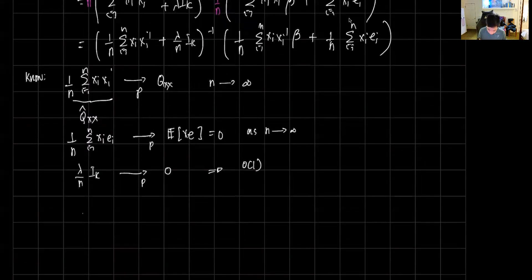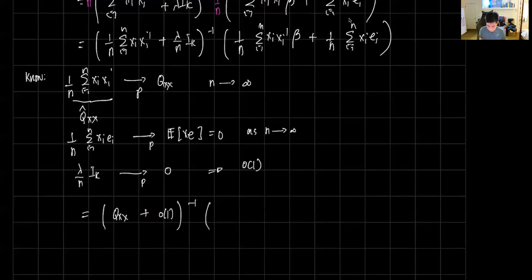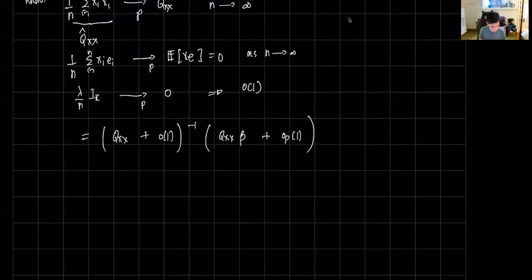Then we can rewrite everything. This first one is just Q_xx plus this one is o of 1, inverse. The first term there is gonna be Q_xx beta plus the last term here is going to be small o_p of 1.